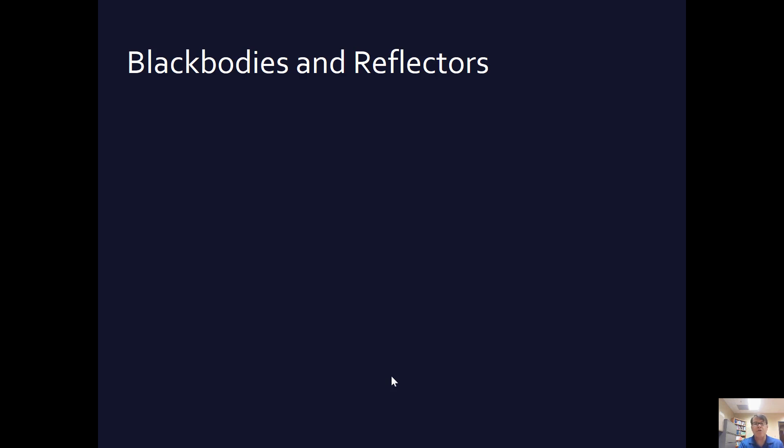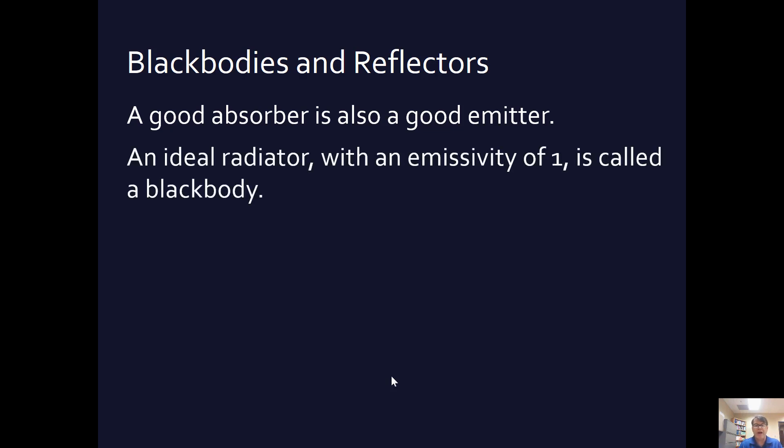Black bodies and reflectors. So, a good absorber is also a good emitter. If something is a total absorber, then it is also a total emitter, and I just told you that that is called a black body. That is an ideal radiator with an emissivity of one. There is also an ideal reflector. This is something that would absorb no radiation at all, but would reflect all the radiation that comes toward it back into the environment. It's having a mirror, a mirroring kind of effect.